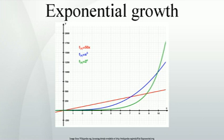Exponential growth occurs when the growth rate of the value of a mathematical function is proportional to the function's current value. Exponential decay occurs in the same way when the growth rate is negative. In the case of a discrete domain of definition with equal intervals, it is also called geometric growth or geometric decay.